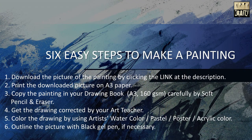Here are six easy steps to make a painting. First, download the picture of the painting by clicking the link in the description. Print the downloaded picture on A3 paper. Copy the painting in your drawing book, which must be A3 of 160 GSM. Get the drawing corrected by your art teacher — this is very necessary. Then color the drawing using artist watercolor, pastel, poster color, or acrylic colors, and outline the picture with a black gel pen if necessary.